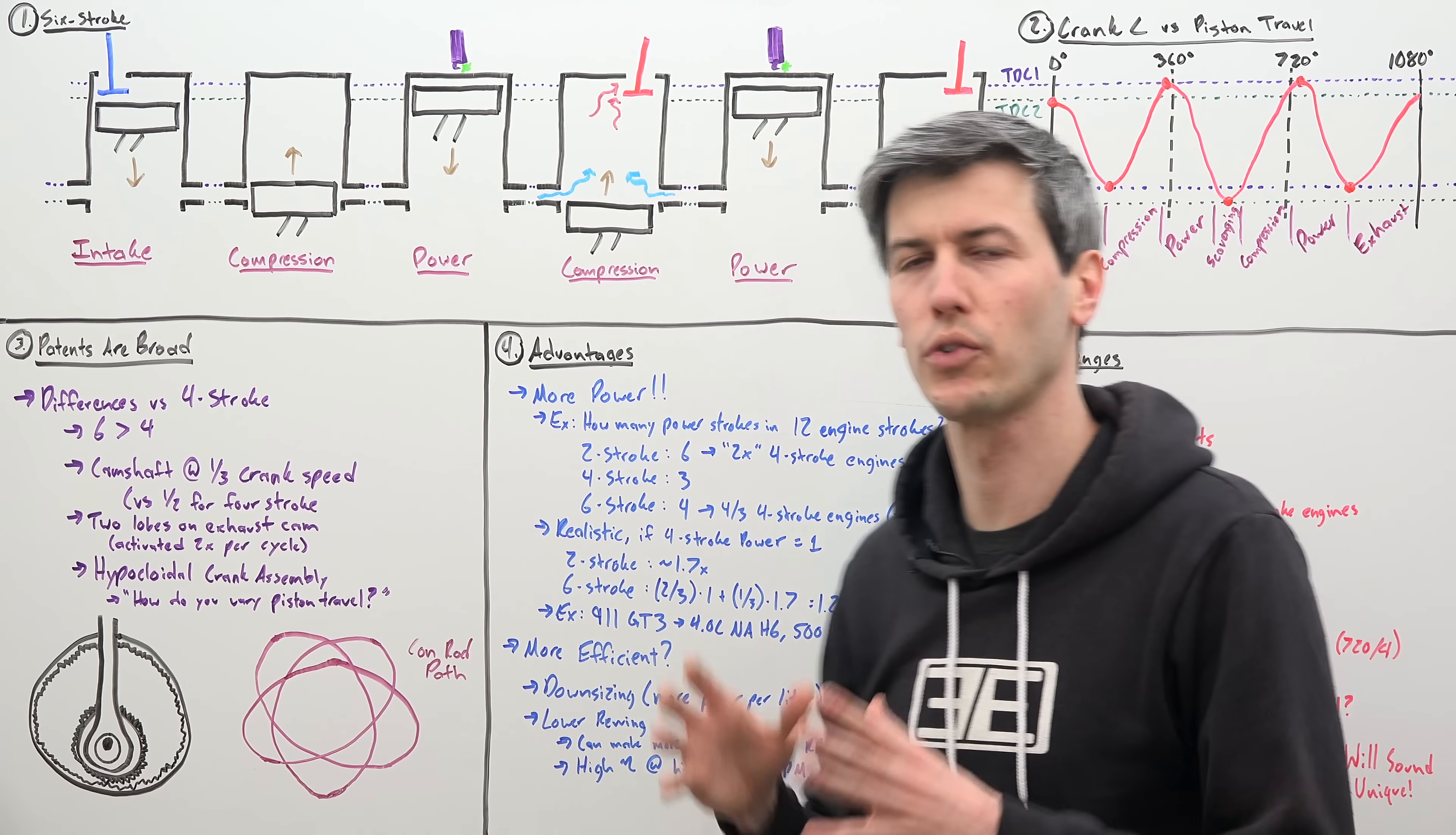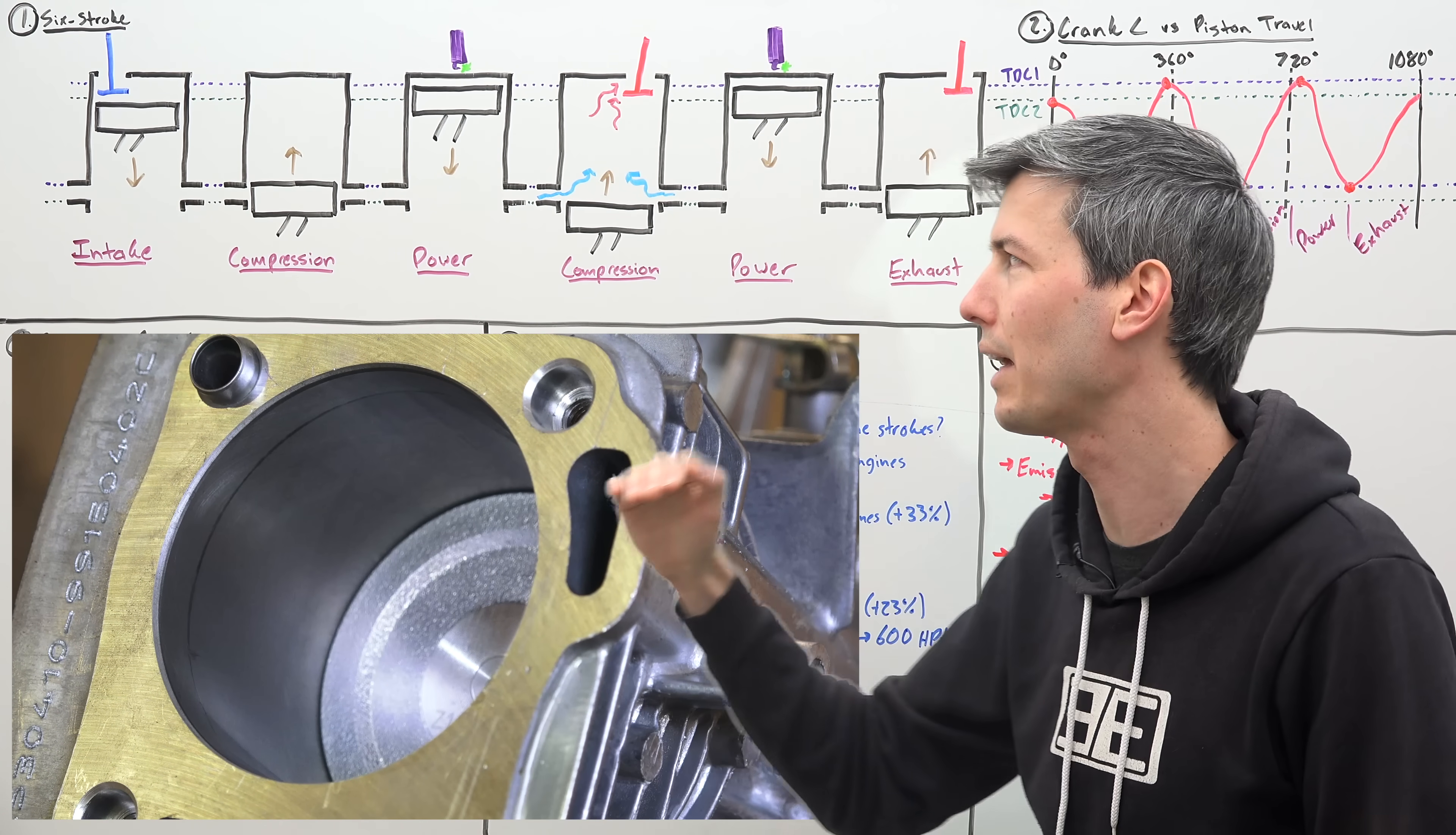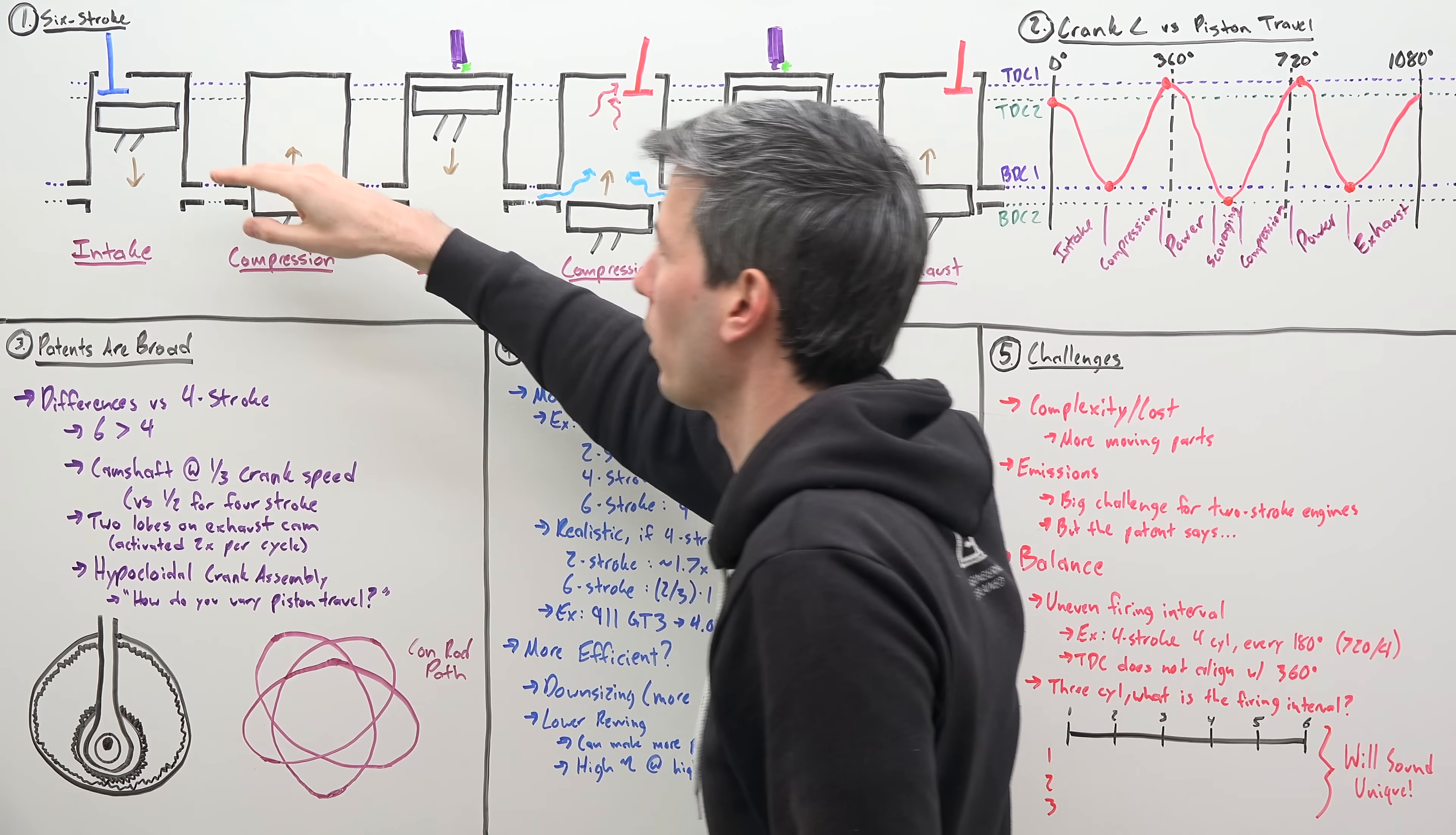Let's look at these six strokes in more detail. One of the critical differences we need to understand versus a typical four-stroke engine is that with a four-stroke engine, you have a high point that the piston reaches called top dead center and a low point called bottom dead center. In this engine, we have two of both of those points. So we have two different top dead centers and two different bottom dead centers.